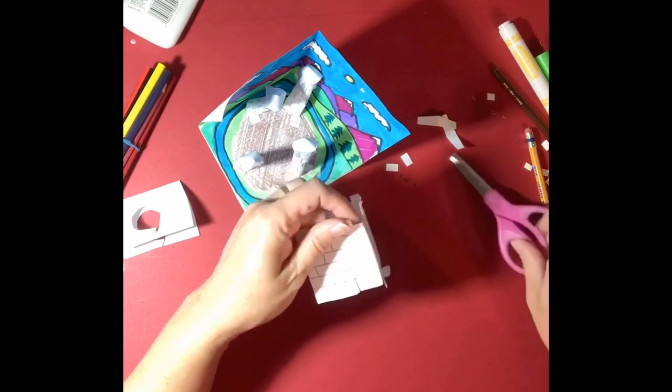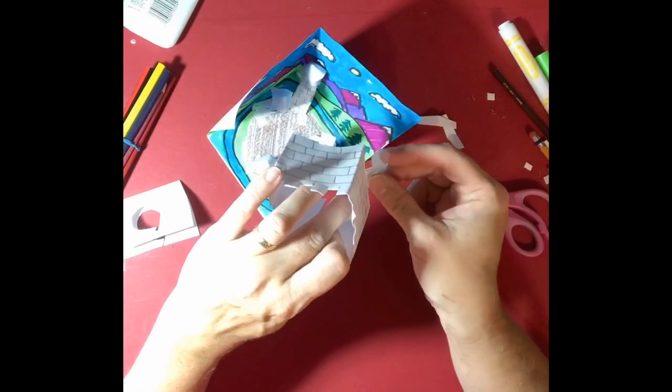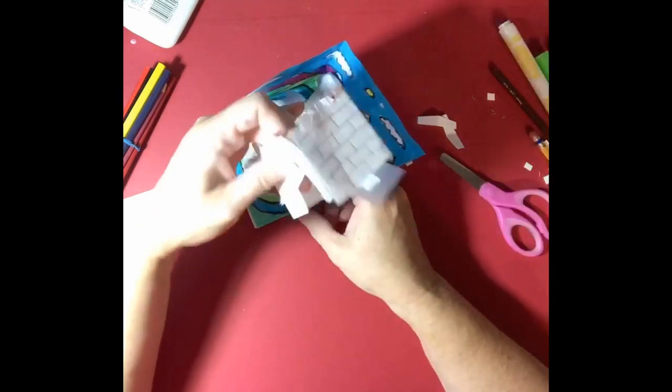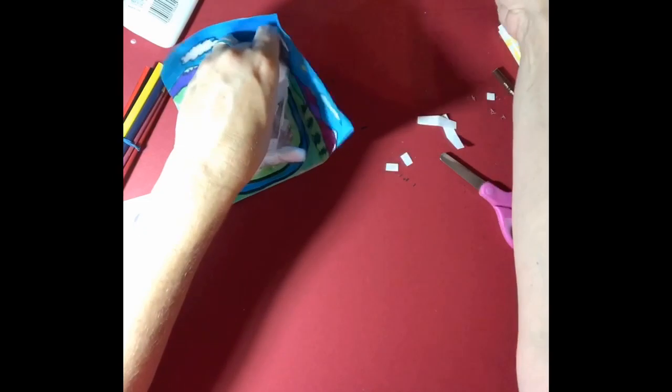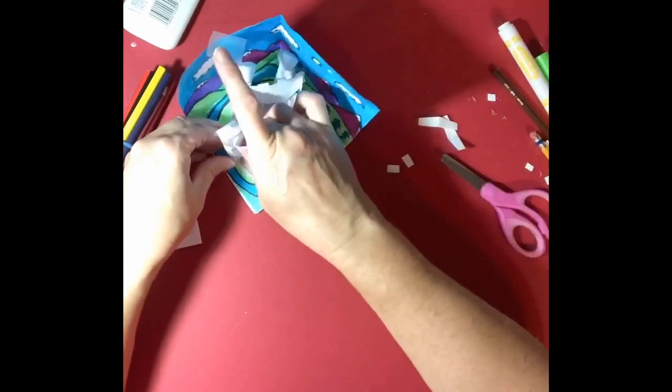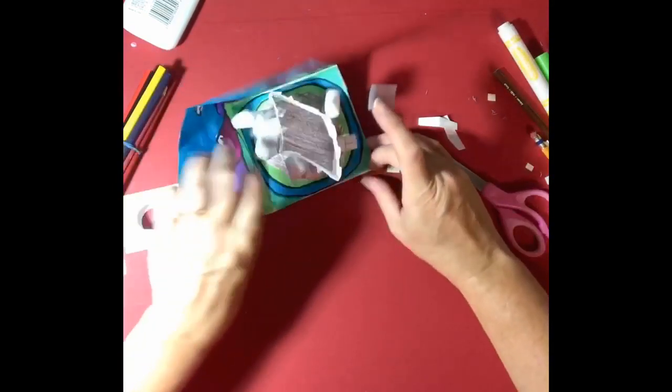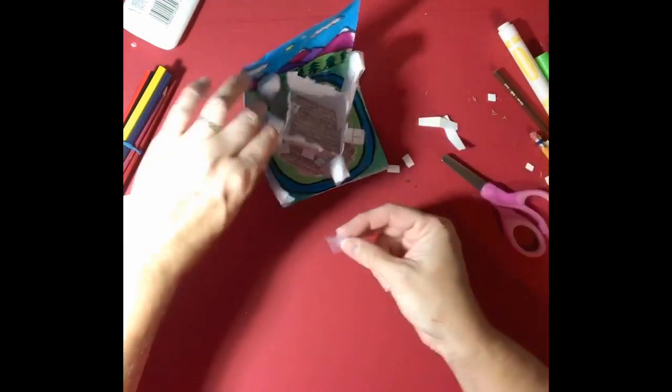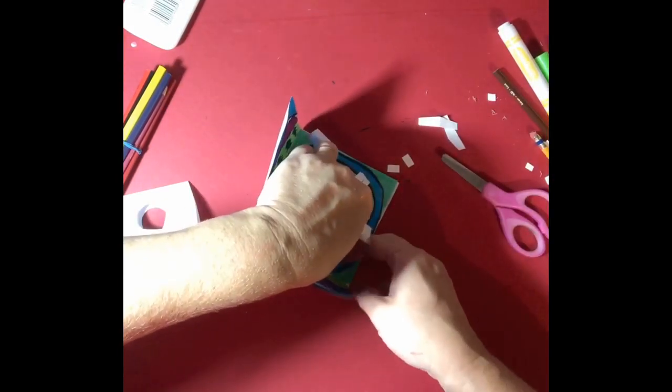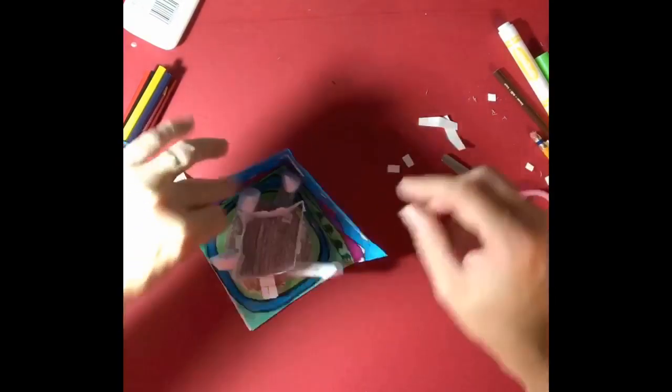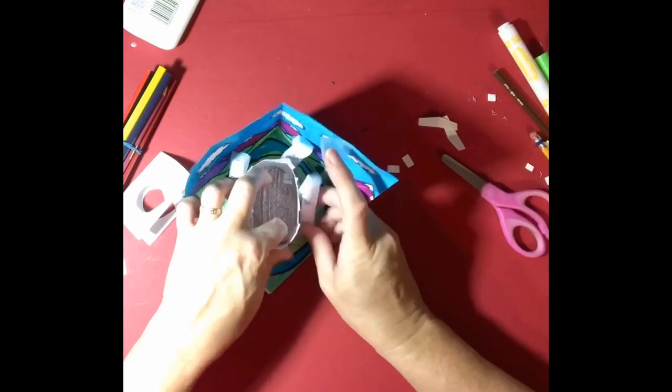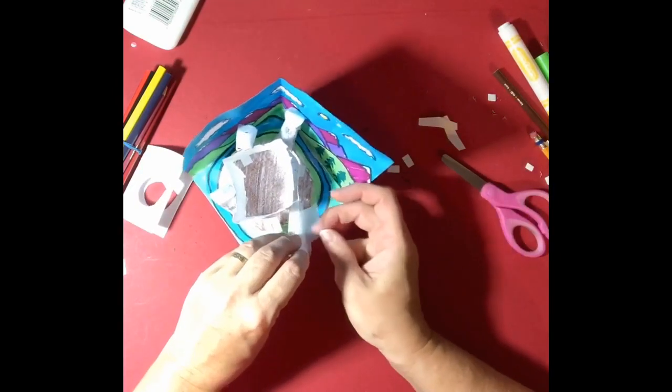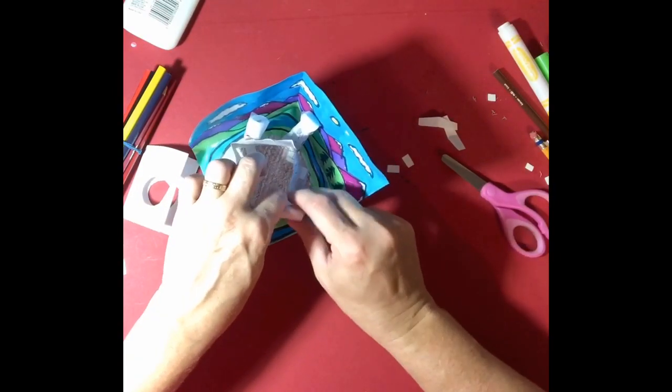Okay, so now I'm gonna take my tape or again you can glue the bottom of the tabs, put it here in the middle. I'm gonna put a piece of tape or you again you can just glue the side to the corners.